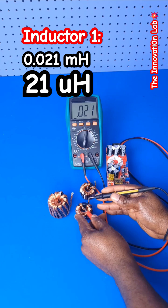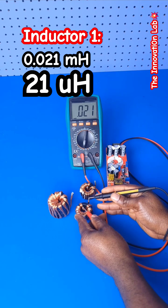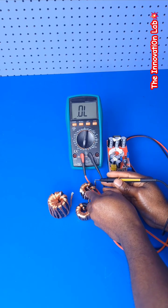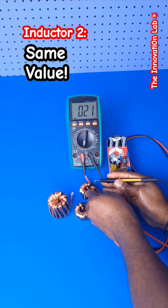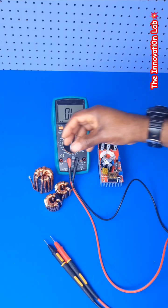And with this one we're getting almost the same reading which is 22 microhenries. Let's go ahead and measure the big inductor here to find out what the actual inductance is going to be.